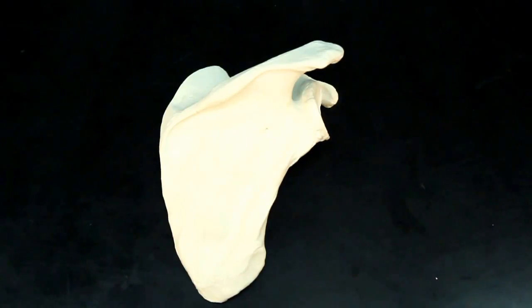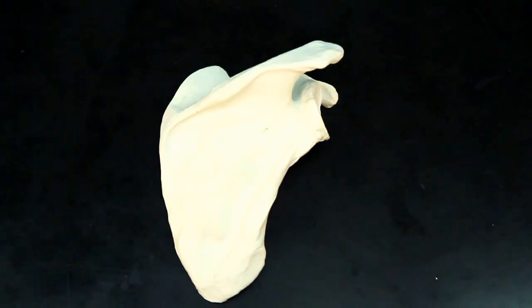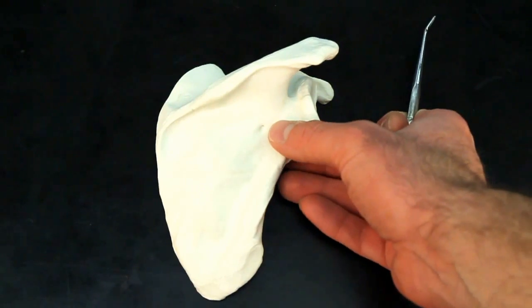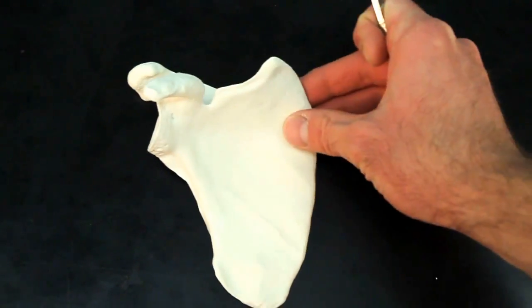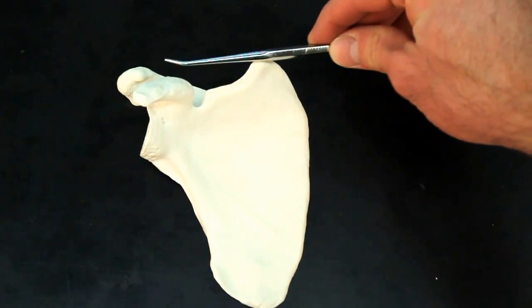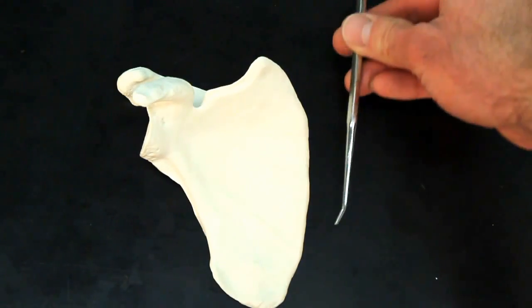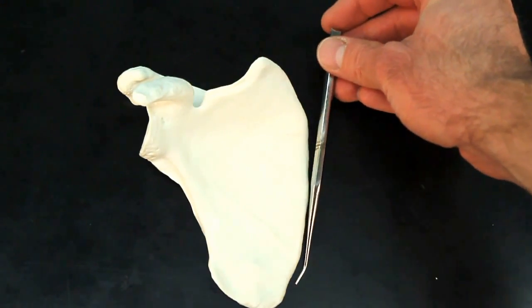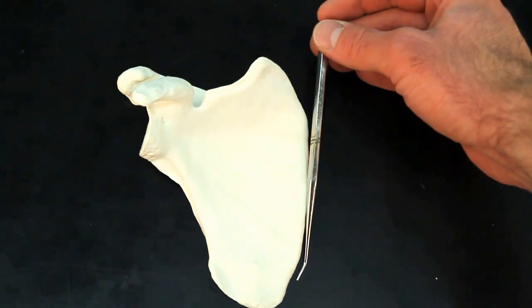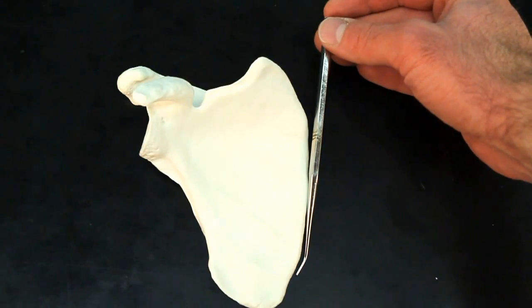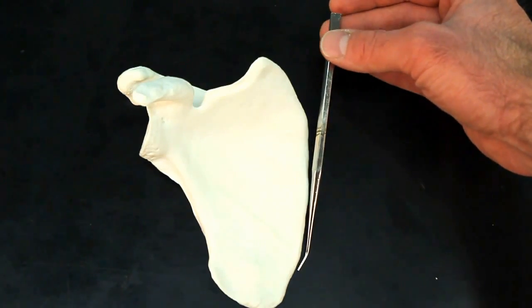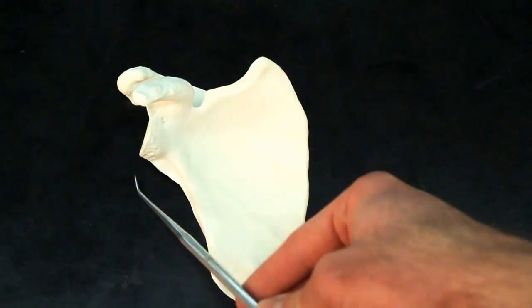Now, we have three different sides to the scapula. We have the superior border, medial border, and lateral border. I'm willing to bet you'd guess the superior border is on top. Now, this border over here, would this be the medial or lateral? Well, hopefully you're thinking that's the medial border. Well, this one is the lateral.